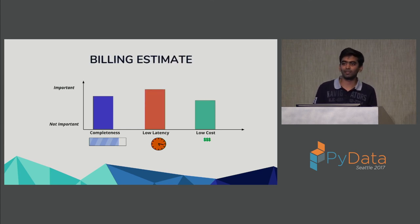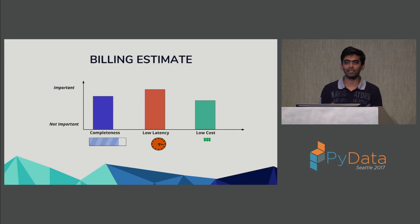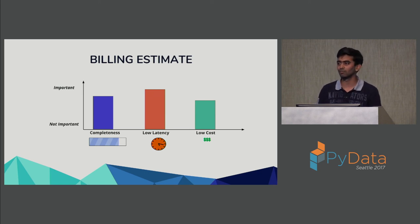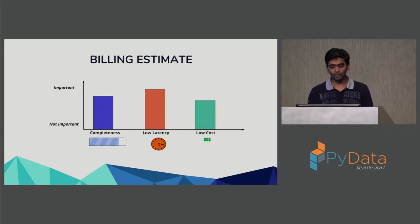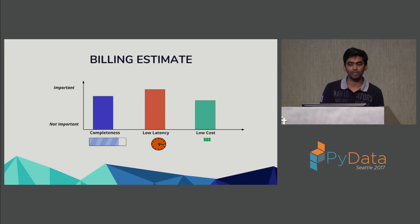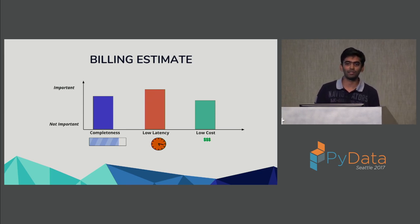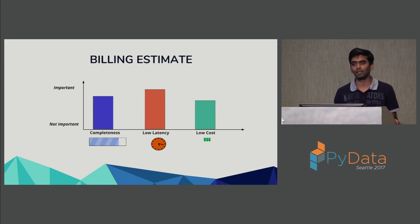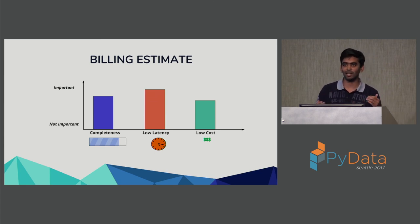For the same billing case, if you wanted to give users a running estimate of their bill so they're not surprised at month end, or to catch a service that starts making excessive API calls, you can compromise slightly on completeness. The estimates don't need to be 100% correct, but you want results updated at least every 10 minutes, and you'd want to save on cost since you're slightly compromising on correctness.